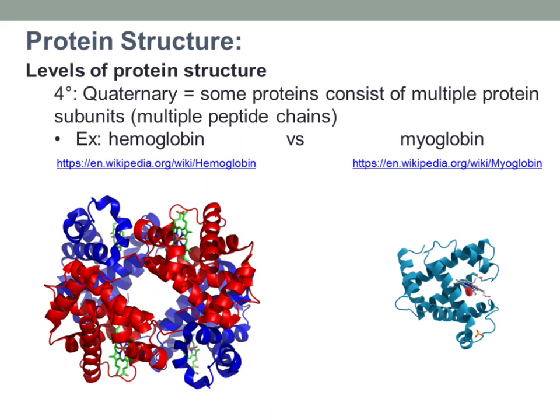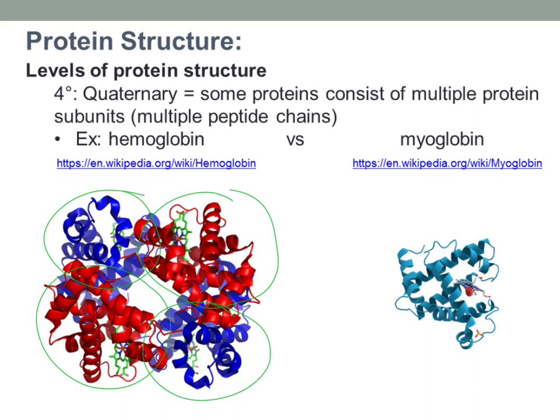Now we also have the quaternary structure, which only some proteins have. Some proteins consist of multiple protein subunits — multiple peptide chains. The classic example is hemoglobin. If you look at hemoglobin, it has four different pieces. In this drawing two are blue and two are red — two alpha subunits and two beta subunits — but the key point is that hemoglobin has four individual peptide chains.